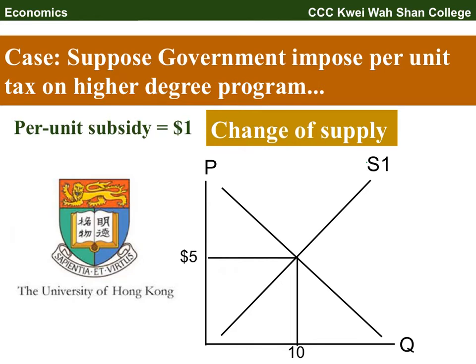For example, if the government encourages the University of Hong Kong to provide more programs so more students can enjoy them, the government says: 'I will give you a subsidy — one dollar per student.' So the university will try to provide more vacancies for study programs in order to get that one dollar.